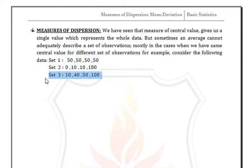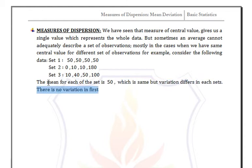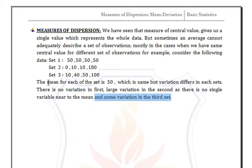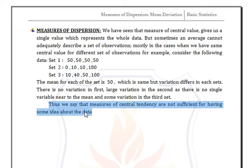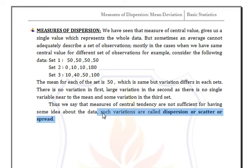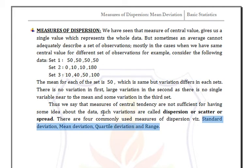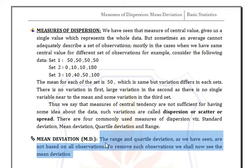For example, with three different sets, we can see that for each set the mean value is 50 but the variance differs. In set 1 there is no variance, while in sets 2 and 3 the variance is large. In set 2 there is no single value near the mean. So measure of central tendency alone is not sufficient, and such spread is called dispersion.